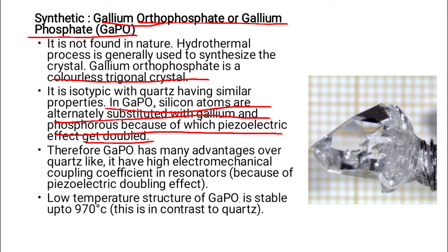GAPO4 has many advantages over quartz. Its low-temperature structure is stable up to 970 degrees Celsius, which is in contrast to quartz. The chemical formula is GAPO4. It is a synthetic crystal whose properties are similar to quartz but with enhanced piezoelectric characteristics.